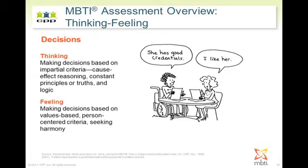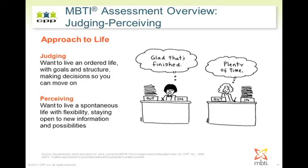The fourth dichotomy — that approach to life — is illustrated by judging and perceiving. Judging has to do with closure, planning, order, and control. Could it be judging or is it perceiving? That is, the adaptability, flexibility, spontaneity, and openness of wanting more information. I use these four cartoons in my workshops to help people think through the four dichotomies of the MBTI and pick which ones they think would suit them in their so-called shoes-off self and perhaps them at work.